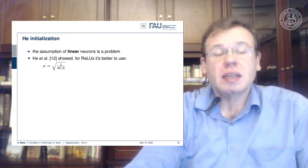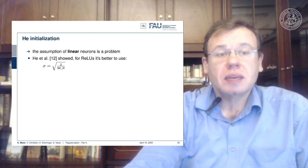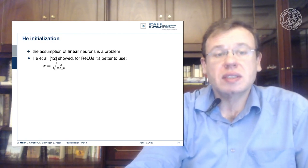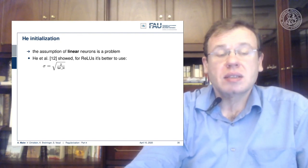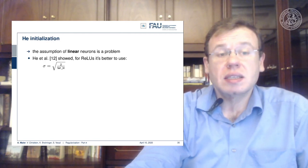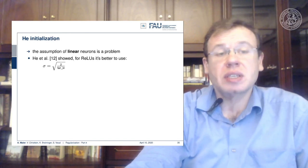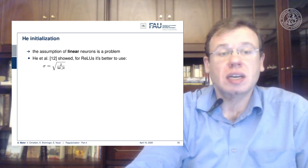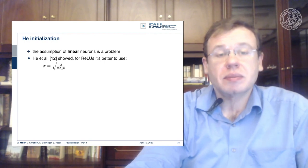Well, what else can be done? There's He initialization, which then also considers that the assumption of linear neurons is a problem. In reference 12, they showed that for ReLUs, it's better to actually use the square root of 2 over fan-in as standard deviation. So this is a very typical choice for initializing the weights randomly.